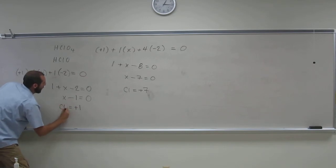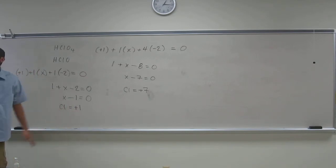So chlorine, in this case, oxidation number is plus one. So chlorine can have weird oxidation numbers.